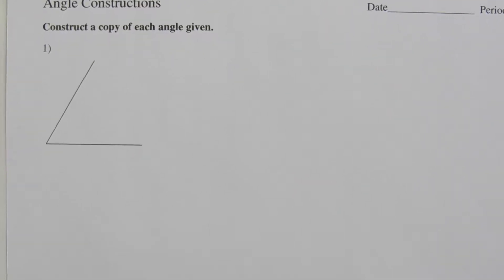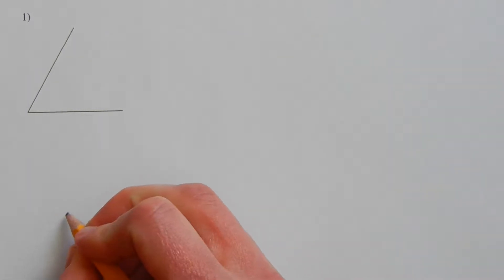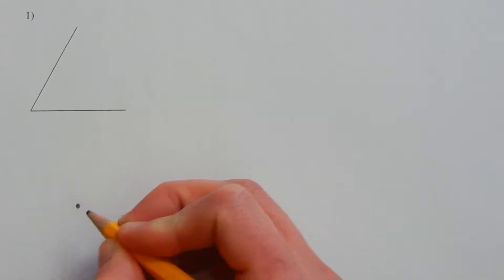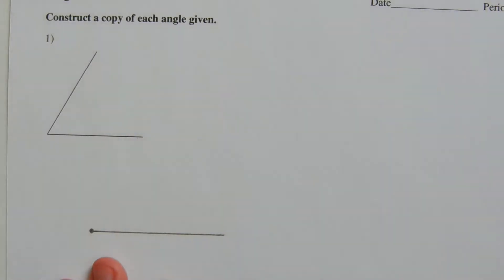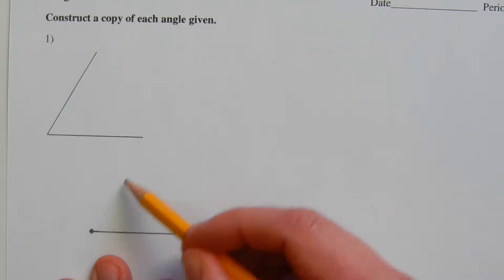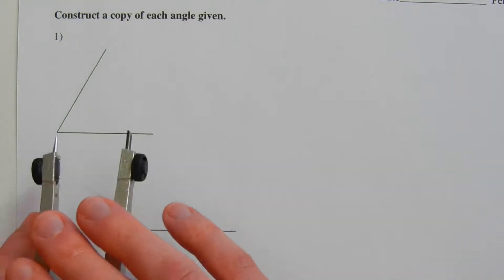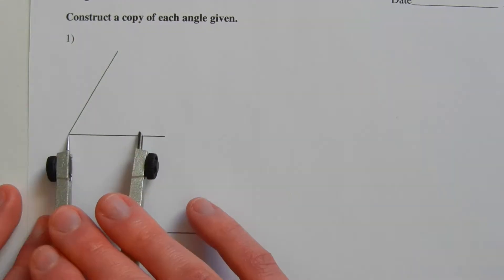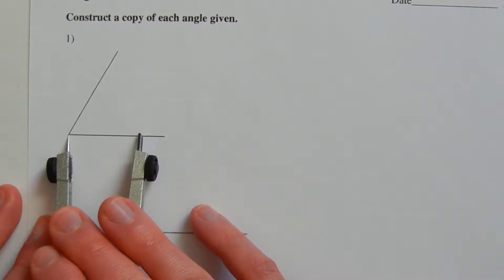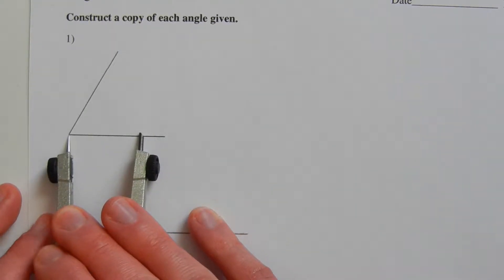For number one, we're going to construct a copy of the angle — essentially making a congruent angle. An angle is formed when two lines or two segments intersect, so we need to start with an endpoint and a line coming out from that endpoint. To figure out what angle the other line will be at, we look at our given angle and copy it. We take our compass starting from the vertex and place it so one point is at the vertex.